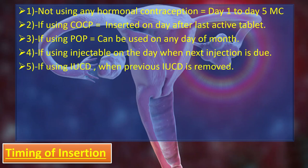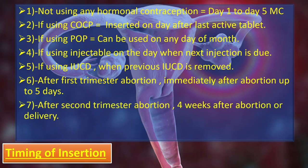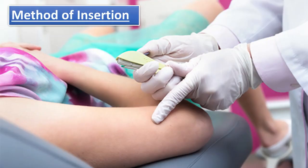If using an IUCD, when the previous IUCD is removed it can be inserted simultaneously. After first trimester abortion, it can be used immediately or up to five days after. After second trimester abortion, insert four weeks after abortion or delivery. If breastfeeding, use a barrier method for seven days after insertion, or first rule out pregnancy.